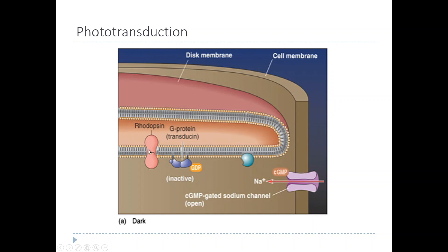In rods, it's called rhodopsin. The cones have their own version of this protein, but this is just the process in rods. When the cell is in the dark, the retinal is in its inactive form, therefore the rhodopsin is in its inactive form.